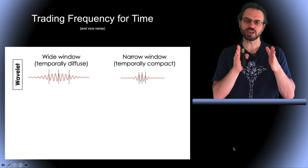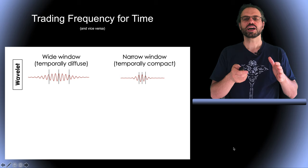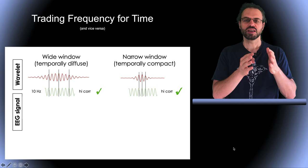Let's consider two Morlet wavelets, one with a wide window on the left and one with a narrow window on the right. If we apply the wide window wavelet to a 10Hz EEG signal containing 10Hz oscillation, we will find a perfect correlation. All the peaks match up. This is true both for the wide and the narrow window wavelet.